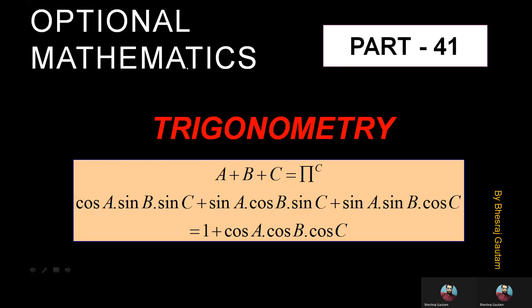Welcome back to the problem from conditional trigonometric identities. In the given question, we will start from the left-hand side, which is given as cosA·sinB·sinC plus sinA·cosB·sinC plus sinA·sinB·cosC.